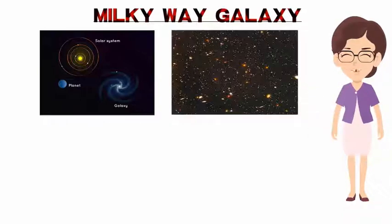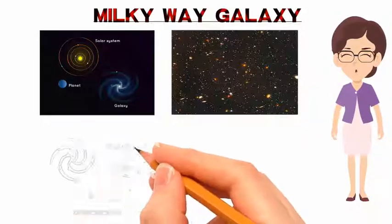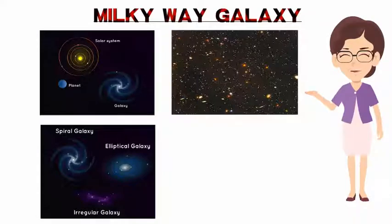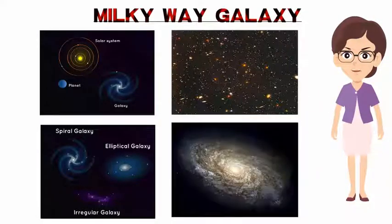Some galaxies are spiral-shaped like ours. They have curved arms that make it look like a pinwheel. Other galaxies are smooth and oval-shaped. They're called elliptical galaxies. And there are also galaxies that aren't spirals or ovals. They have irregular shapes and look like blobs.